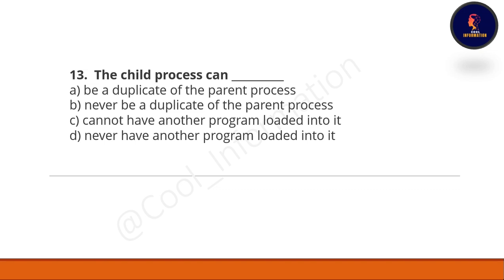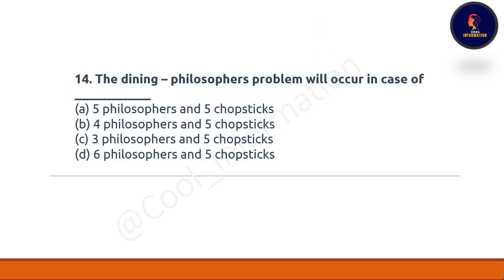Question 13: the child process can — Option A: be a duplicate of the parent process. Option B: never be a duplicate of the parent process. Option C: cannot have another program loaded into it. Option D: never have another program loaded into it. This is a simple question and the correct option is A — be a duplicate of the parent process.